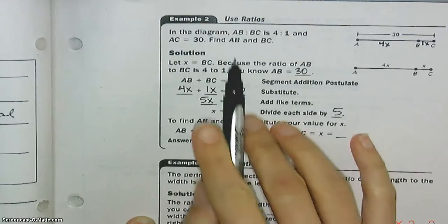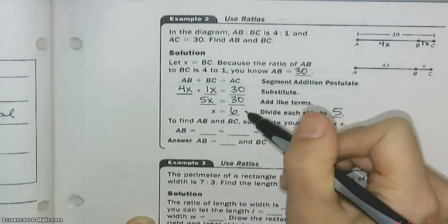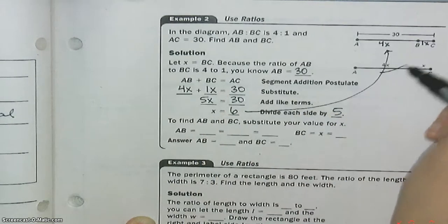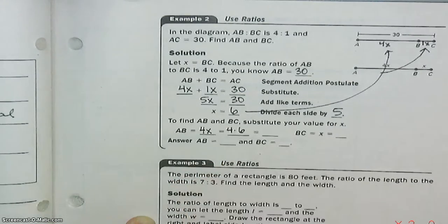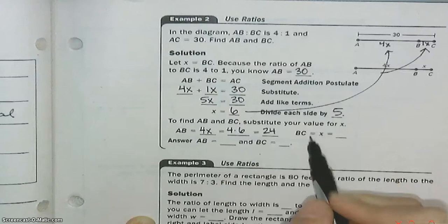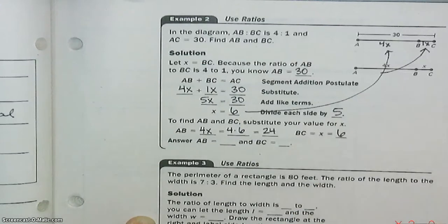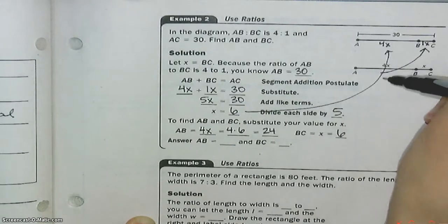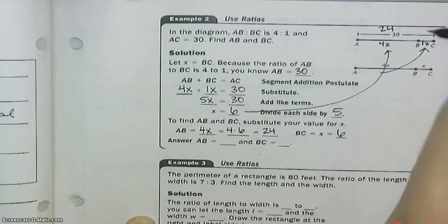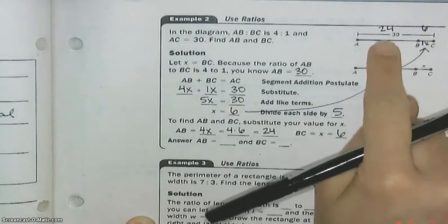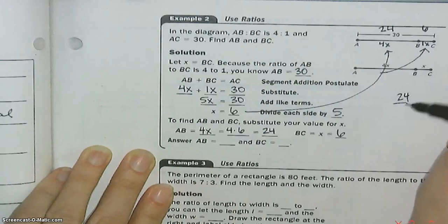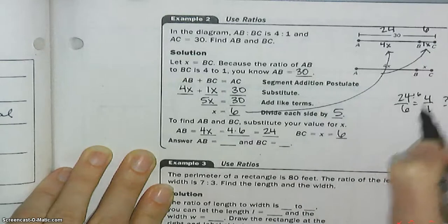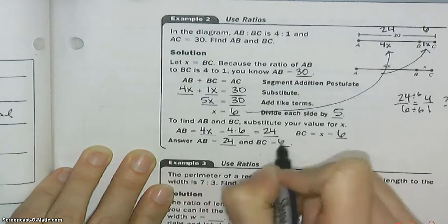Divide both sides by 5, and we get x equals 6. But we're not done. The question wants us to find AB and BC. So we need to take this and plug it back in. AB is 4x, so 4 times 6 is 24. And BC was just x, which is 6. Does that make sense? If this is 24 and this is 6, is 24 plus 6 30? Yep. And does this make a ratio of 4 to 1? Is 24 over 6 equal to 4 over 1? Yep. We divide both of these by 6. So we did this problem right.